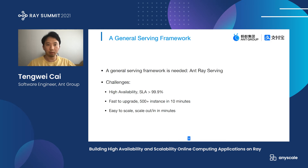To build such an online application, we found the following challenges. First, how to achieve 99.9% high availability. As we all know, Ray is a stable system, but its maintenance is more complex than a stateless system. Ray does not support rolling upgrade yet, and the Ray head is still a single point of failure.